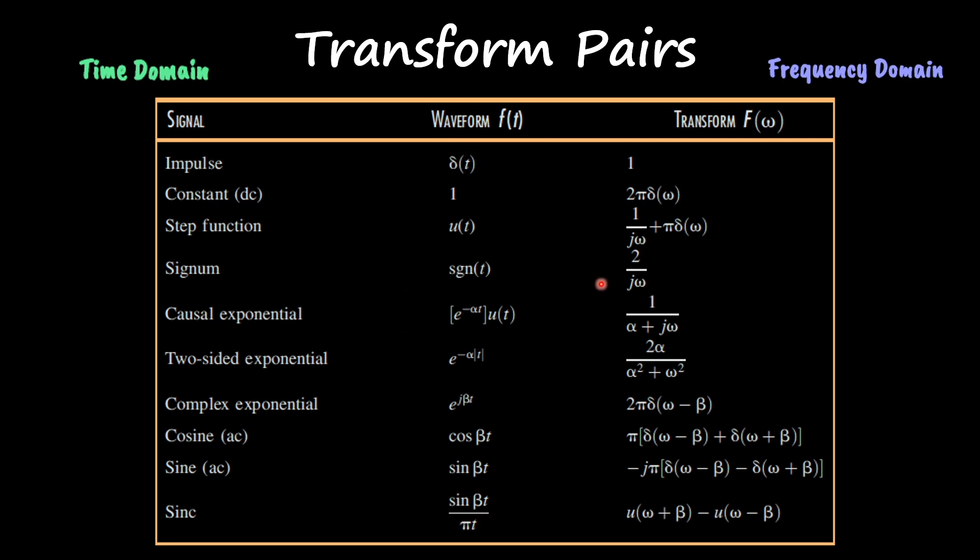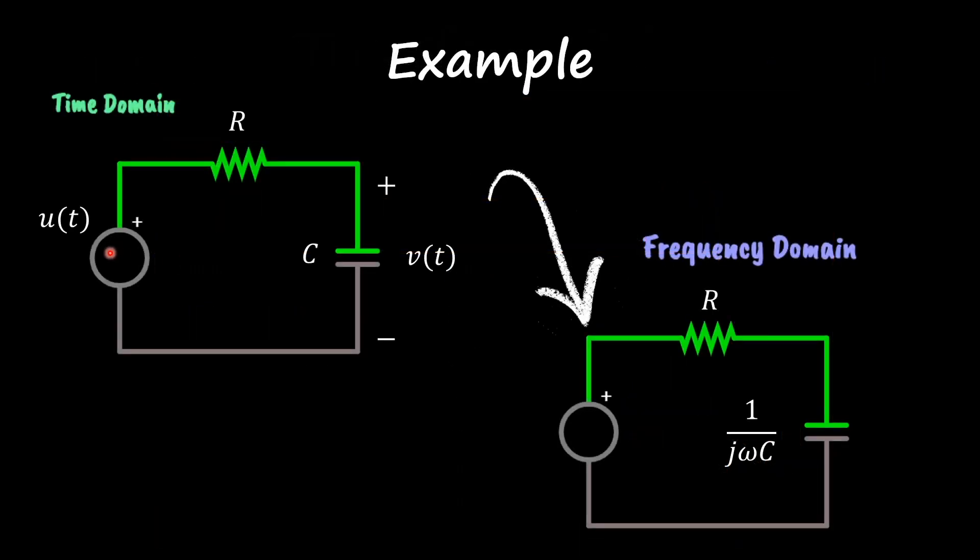In our particular case, we have a step function which is equal to this part over here. So I have the u(t), I plug in the respective transform pair, and I want to find the voltage across the capacitor.